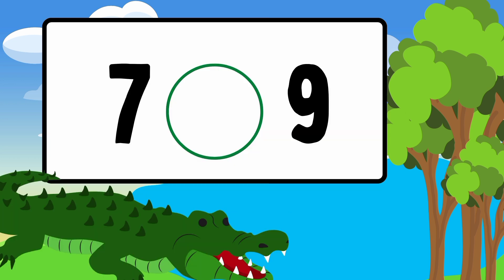Now let's take some examples to compare the numbers. Let's compare 7 and 9. Remember that the alligator's mouth always wants to eat the bigger number. So we put the greater than symbol pointing towards 9.